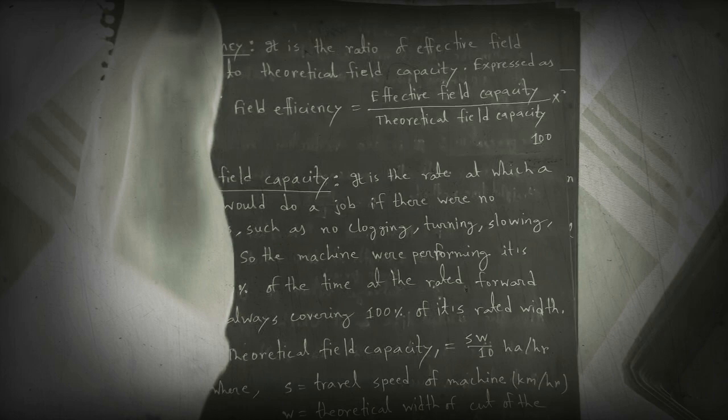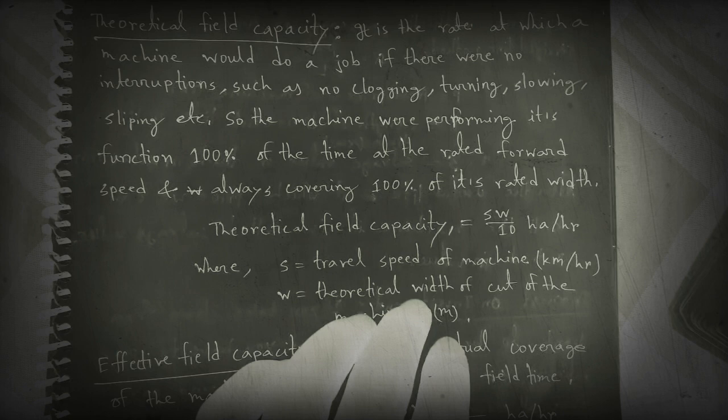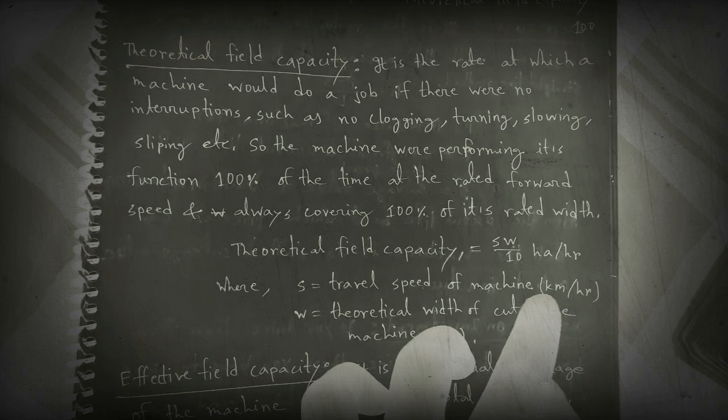The machine operates at its rated forward speed and always covers 100% of its rated width. Theoretical field capacity (TFC) equals W×S divided by 10, with units of hectare per hour, where S is the travel speed of the machine in kilometers per hour and W is the theoretical width of cut of the combine harvester.